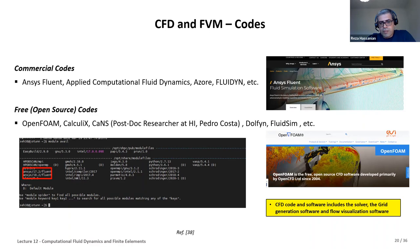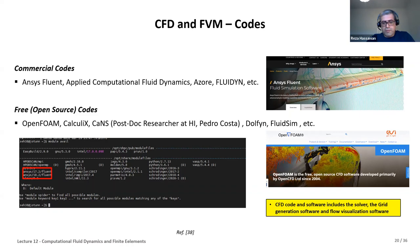This was a brief review of the methods used in fluid dynamics computation. The finite volume method, the last one we discussed, is used in most commercial codes such as ANSYS, as well as open-source codes like OpenFOAM, Calculix, and CANS — an open-source code from researcher Pedro Casta at the University of Iceland. Here you can see a screenshot of the Newton supercomputer at the University of Iceland, which has a module for ANSYS Fluent. Commercial codes usually have mesh generation software and flow visualization, so we can solve problems from start to finish including post-processing.